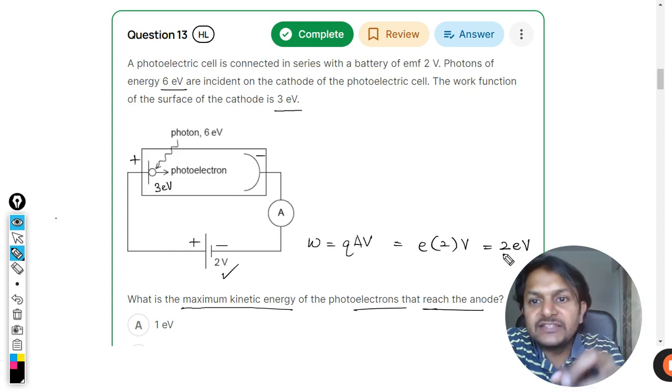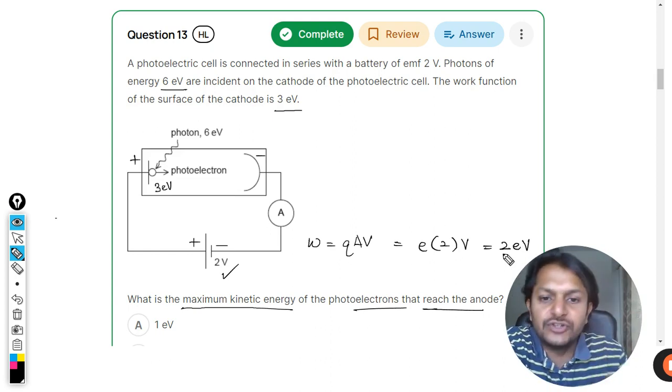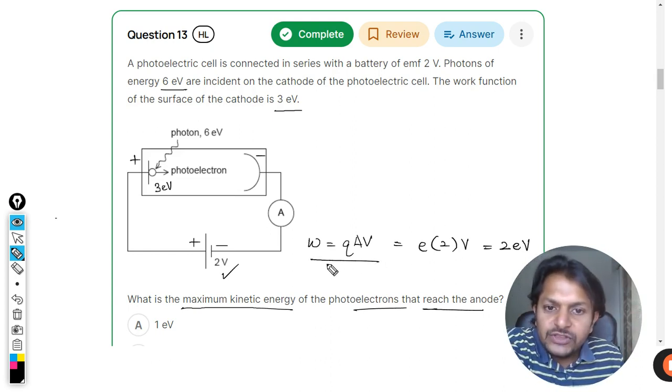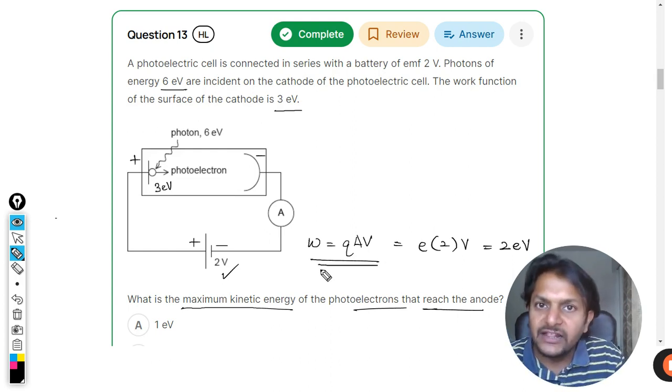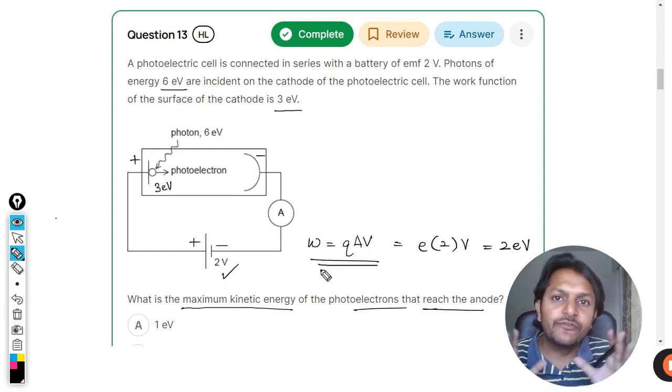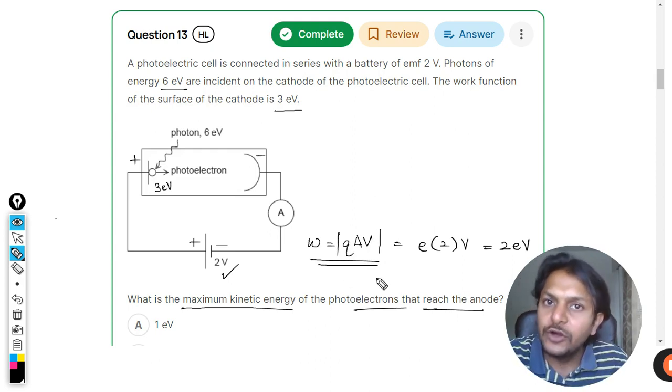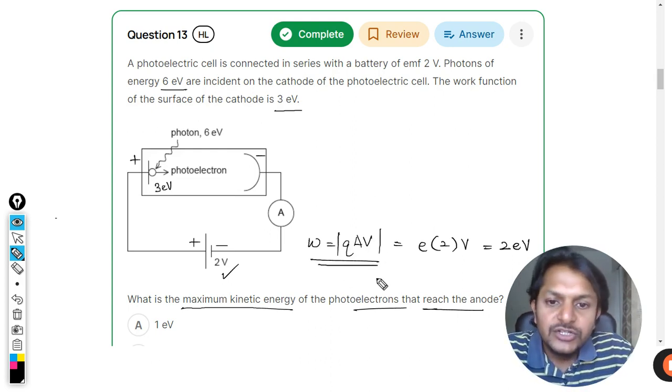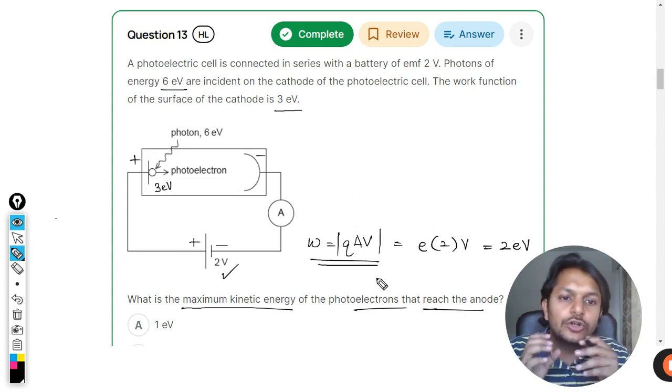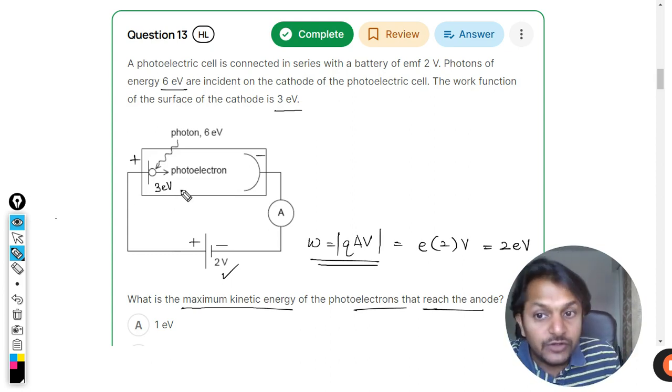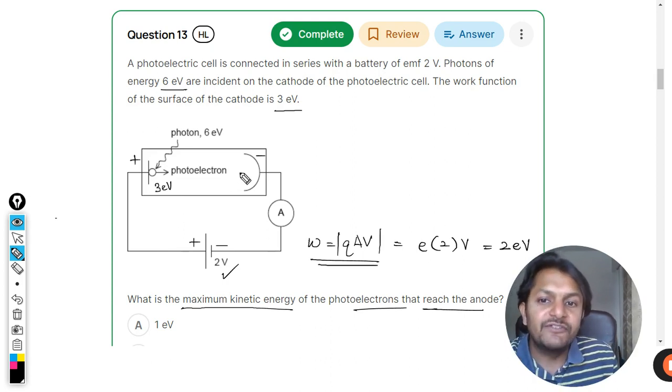So this much work will be done against the potential. This formula is not using the negative sign; I am just talking in terms of magnitude. So you can use modulus here not to get confused. So work is equal to this. So 2 eV is used against the stopping potential. Of 3 eV, only 1 eV is left.